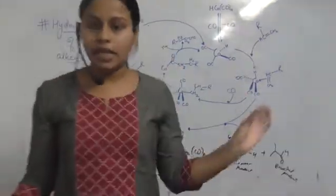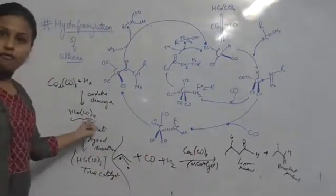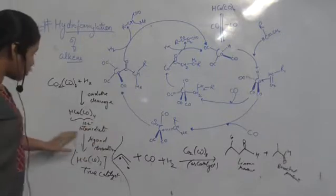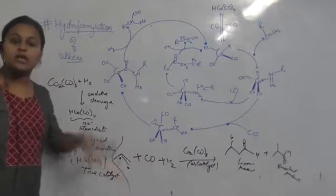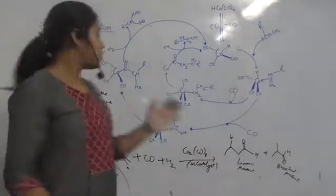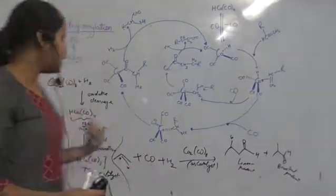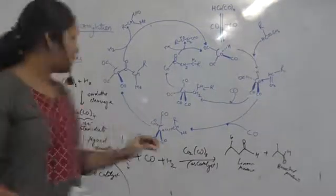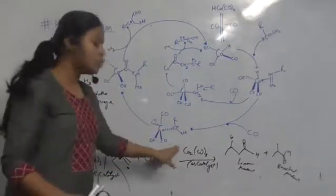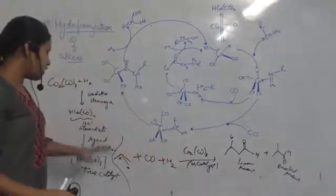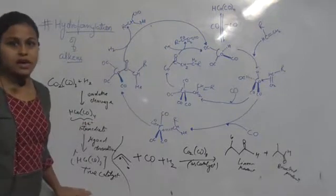There is a dissociation of a ligand — one of the CO ligands in the HCo(CO)4 intermediate gets dissociated, and what we are left with is HCo(CO)3. This is the true catalyst which actually then participates in the reaction. So the cobalt catalyst Co2(CO)8 goes through oxidative cleavage and ligand dissociation steps, and the true catalyst which actually catalyzes the reaction is HCo(CO)3.